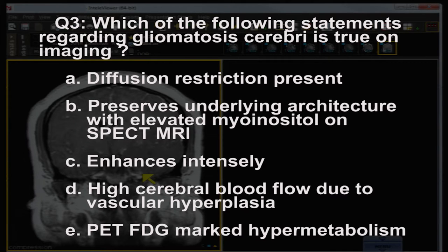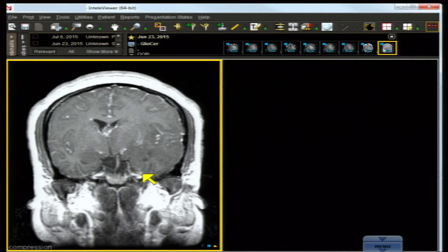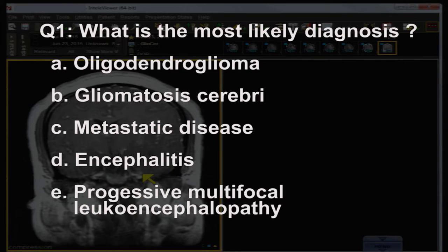Back to question one: choice A, oligodendroglioma — this is a spreading infiltrative disorder, but while it involves the anterior centrum semiovale, it doesn't cross the midline as often as other diagnoses. It calcifies and bleeds, and this lesion neither calcified nor bled. Oligodendroglioma does so 90-plus percent of the time. Gliomatosis cerebri — the correct answer — involves multiple lobes and hemispheres.